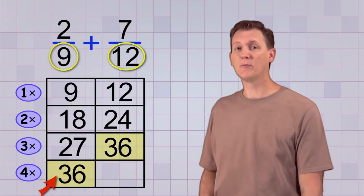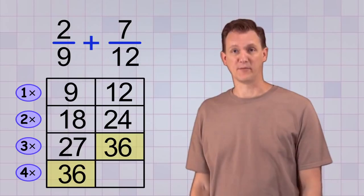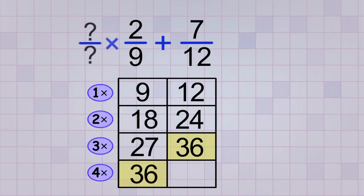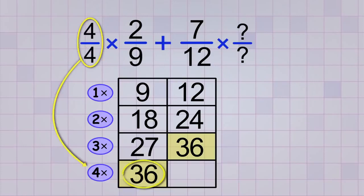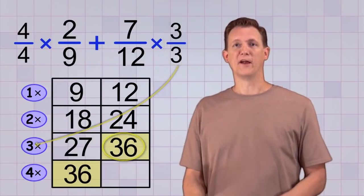36 is the least common multiple of 9 and 12, so we'll use that as our common denominator. Now let's figure out which whole fractions we need to use to make our fractions have that denominator. We use 4 over 4 for our first unlike fraction, since 4 times 9 was 36. And we use 3 over 3 for our second unlike fraction, because 3 times 12 was 36.